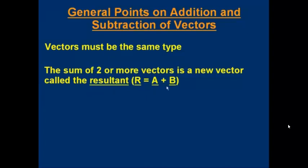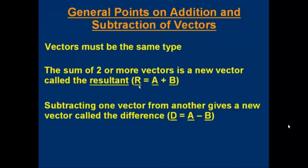For example, if we add vectors A and B together, the sum is called R. R is the resultant. If we subtract one vector from another, it again gives a new vector — we call that the difference, and the new vector is the same type of vector as we started with. So if we've got vectors A and B, we could work out A minus B, and that would give us D, which is the same type of vector as A and B. It's called the difference between A and B.